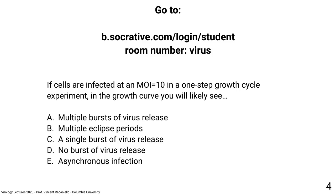Question: if cells are infected at an MOI of 10 in a one-step growth curve, you will see: multiple bursts of virus release; multiple eclipse periods; a single burst of virus release; no burst; or asynchronous infection. The answer: a single burst of virus release. At MOI of 10, from the Poisson distribution, most of the cells are infected, so you get a one-step. Multiple cycles only occur at low MOI — one or below.